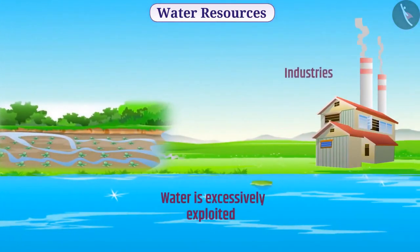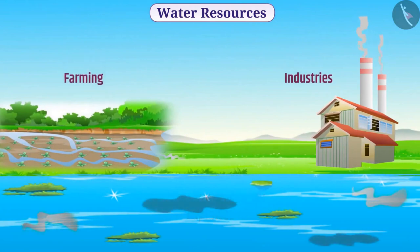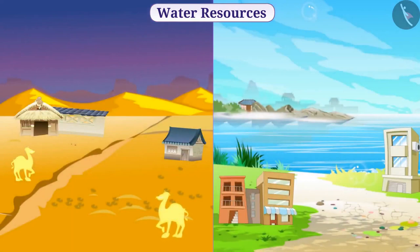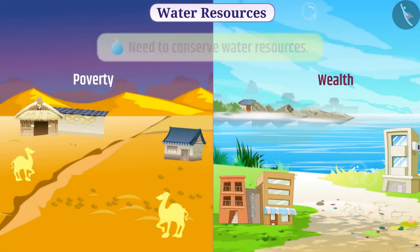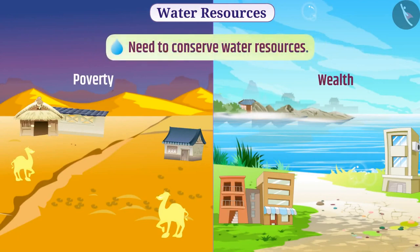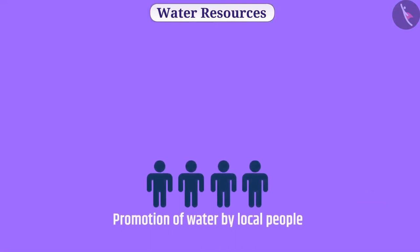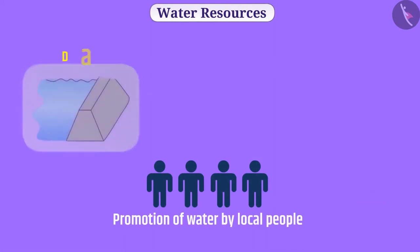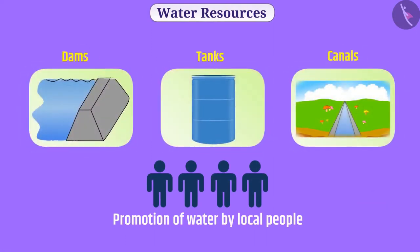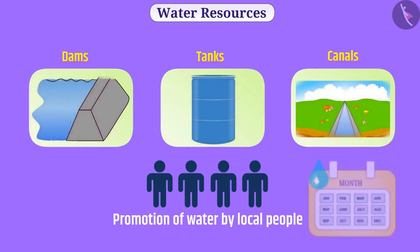Water is excessively exploited in industries and farming, and water pollution is also increasing due to various reasons. Due to many such reasons, the amount of available water has decreased. Absence of water is also closely related to poverty, and therefore we need to conserve water resources. Since ancient times, water has been conserved by local people by making dams, tanks, and canals.